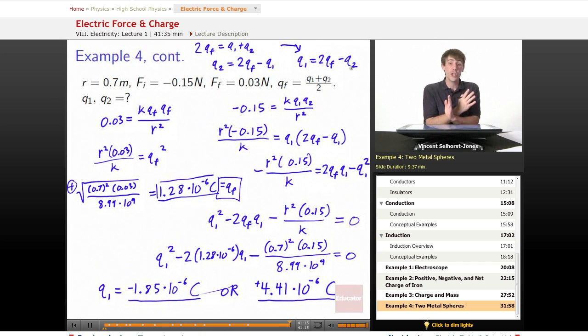We don't know which charge was on which sphere, and we can't know that without getting a little more information, but we do know that the two charges are going to have to be positive 4.41 times 10 to the negative sixth Coulombs, and negative 1.85 times 10 to the negative sixth Coulombs. Hope that made sense. Hope you've got a better understanding of how electricity works, and we've got a lot more to cover in it. Thanks. See you at Educator.com.